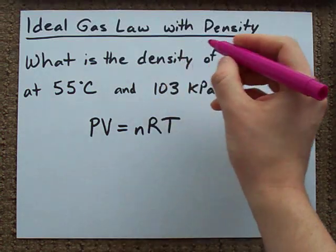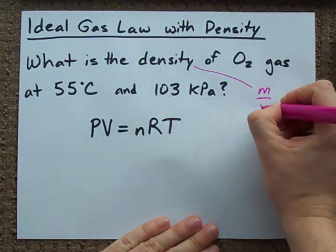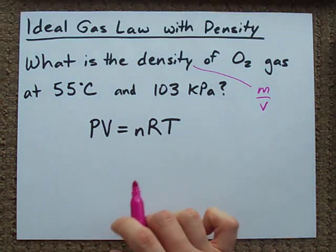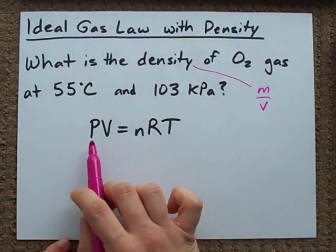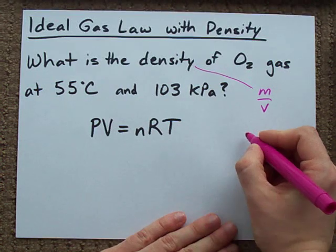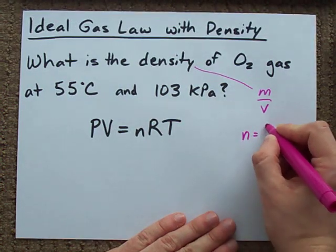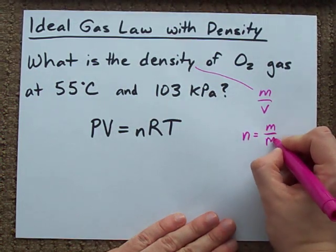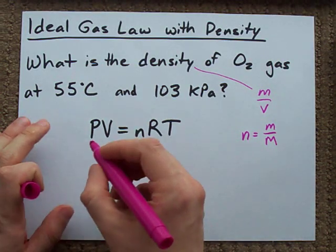Remember, density is mass over volume. Now, the way that mass is found in the ideal gas law equation is in n, because the number of moles is the same as mass over molar mass. So, check this out.